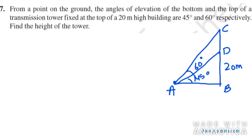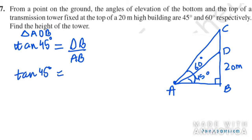So let's first find AB in this case. We can easily apply tan 45 degree here. In triangle ADB, tan 45 degree is equal to DB over AB. So tan 45 equals DB. In this case, DB is 20 meters. So AB in this case will be 20 meters.